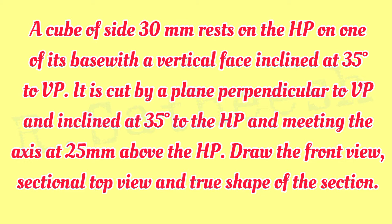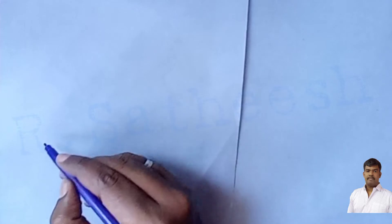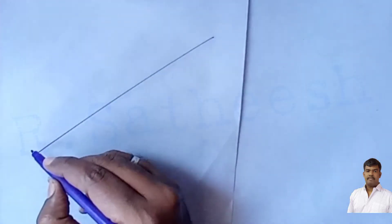As per our problem, the condition is: a cube of side 30 mm rests on the HP on one of its base edges, with a vertical face inclined at 35° to the VP. It is cut by a plane perpendicular to the VP and inclined at 35° to the HP, meeting the axis at 25 mm above the HP. Draw the front view, sectional top view, and true shape of the section.